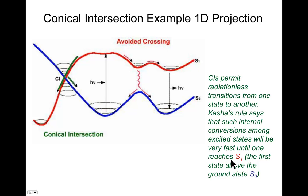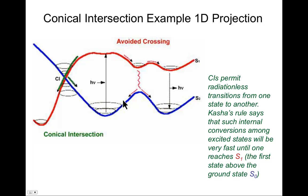If we take S0 to be the ground state, there is a rule called Kasha's rule that says the internal conversions among excited states will be very fast until you reach S1, the first state above the ground state. The reason Kasha's rule generally applies is that there tend to be many excited states close to one another, all significantly above the ground state, so the opportunities to cross to the ground state surface are considerably reduced.